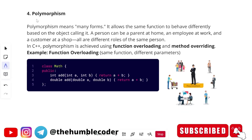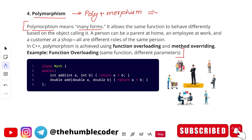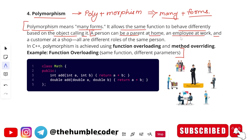The next pillar of OOP is polymorphism. Polymorphism is made up of two words: 'poly' and 'morphism', where poly means 'many' and morphism means 'forms'. Polymorphism allows the same function to behave differently based on the object calling it. A real-life example: a person can be a parent at home, an employee at work, and a customer at a shop — all different roles of the same person. In C++, polymorphism is achieved using function overloading and method overriding.